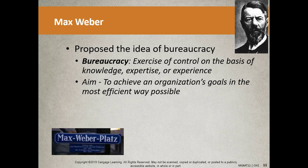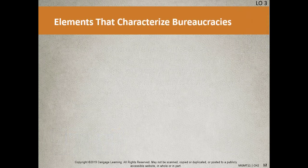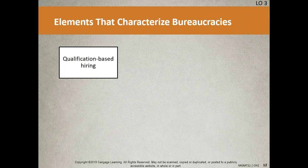Weber devised seven elements that characterize bureaucracies. The first is qualification-based hiring. Weber lived in an era of nepotism — hiring friends, neighbors, family of local politicians. In this case, he's saying qualification-based hiring is the name of the game. Second, merit-based promotion: you don't get promoted because you know someone; you get promoted based on merit. I remember General Electric using the term 'meritocracy' to describe the kind of company they were.